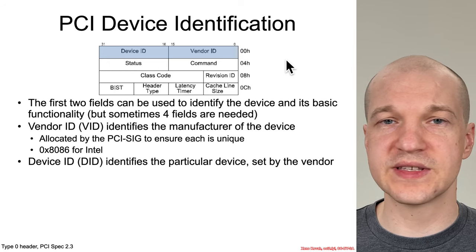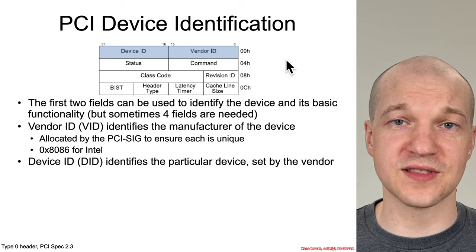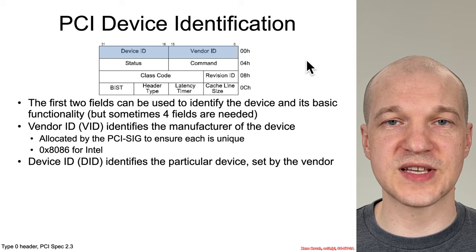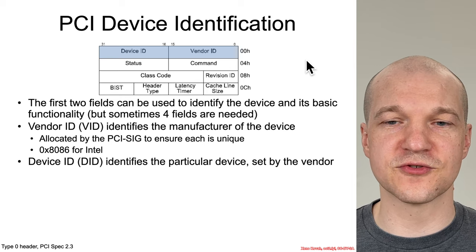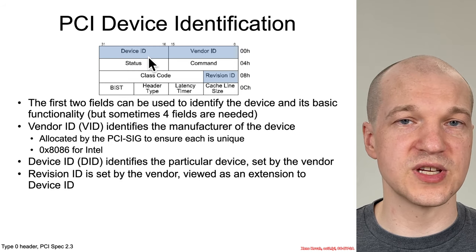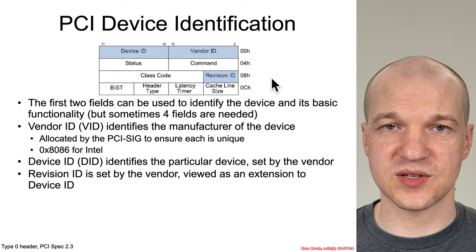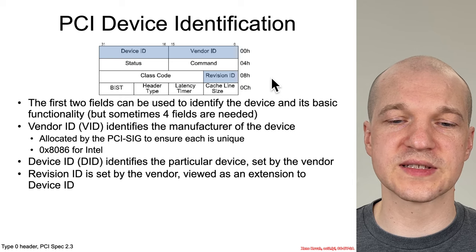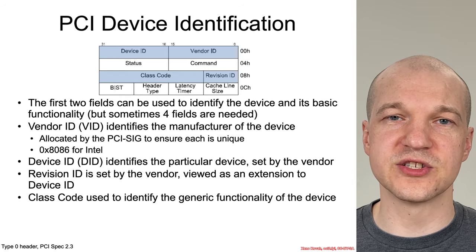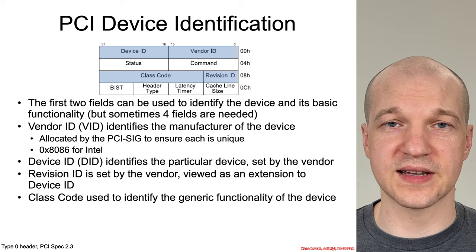So when you were looking up the device ID for your memory controller or LPC device, you would have seen that the vendor ID was always 8086 — because that's Intel — and the device ID was whatever Intel set it to for that particular device. Even though we didn't fully understand it at the time, we were looking at the PCI config address space standardized header. There's also a revision ID, which lets a vendor distinguish between slight hardware changes, and a class code, which describes the generic functionality of a device — such as being a network card or a graphics card.